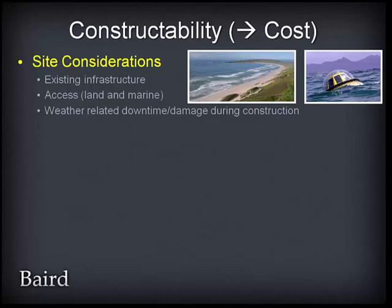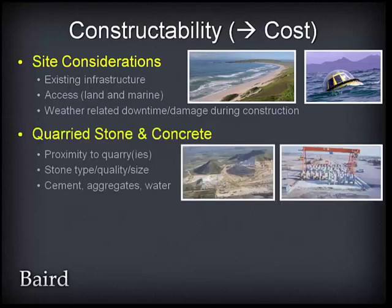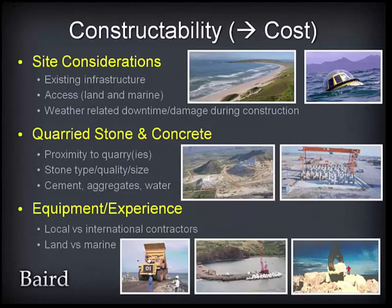Constructibility is a key consideration that should be addressed early on, as it has important impacts on cost. Site considerations include the presence of existing infrastructure, access from land or water, and the potential for weather-related downtime or damage during construction. Construction materials — generally quarried stone and concrete — are another important input. Site proximity to quarries, stone type, quality, and size of quarry yield are all important, as are concrete design and cement, aggregate, and water sources for concrete armour units. The equipment and experience required to build the structure — local versus international contractors, and land versus marine-based construction — are also key considerations.